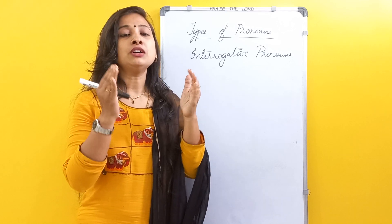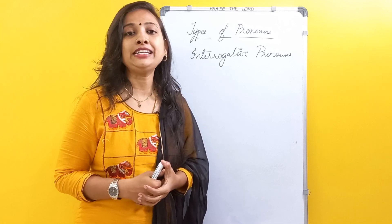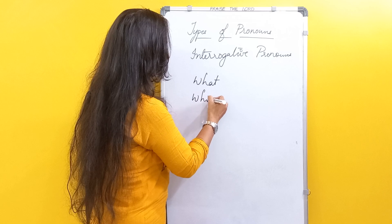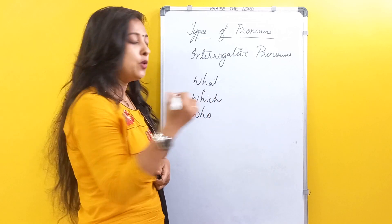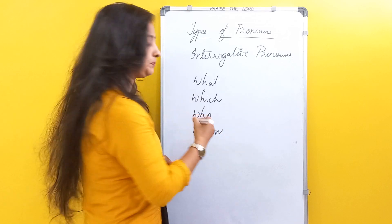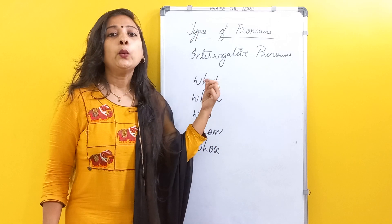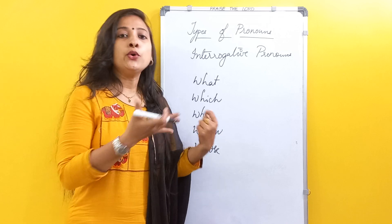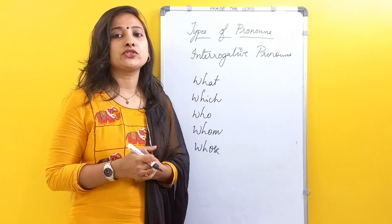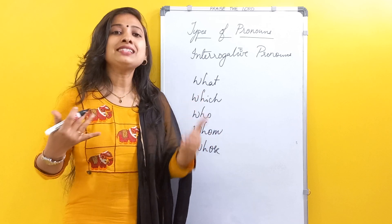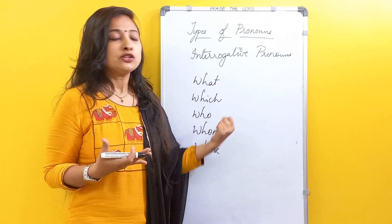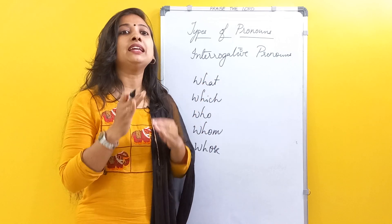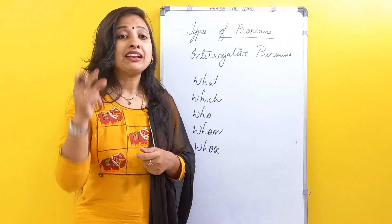When we are using the term interrogative pronoun, it indicates these are the pronouns which are used to ask questions about the subject or to the subject. The words which are used to make such question statements, we call them interrogative pronouns. These are words like: what, which, who, whom, whose. So these are the words we use in order to ask questions — for example, 'What is your name?', 'Which color do you like?', 'Who is your teacher?'